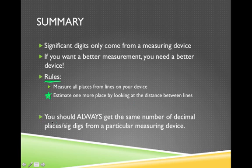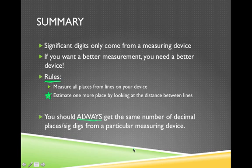Here's a last little tip. You should always get the same number of decimal places and significant digits from a particular measuring device. The device always has the same lines and the same number of gradients, and as a result it should always give the same type of answer back. This is a great thing to watch out for when doing labs — if your data values don't match up with one another, that means you're making mistakes along the way and may need to go back and re-measure until the significant digits definitely match.